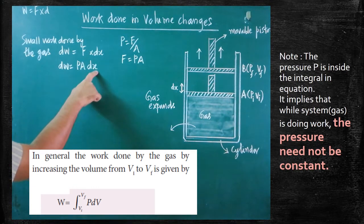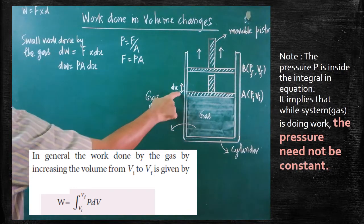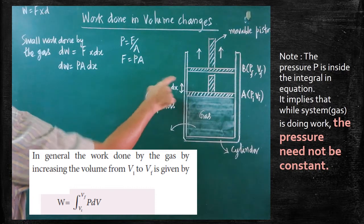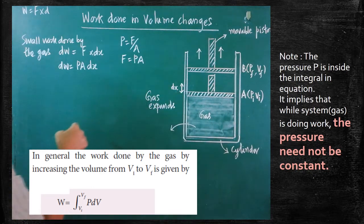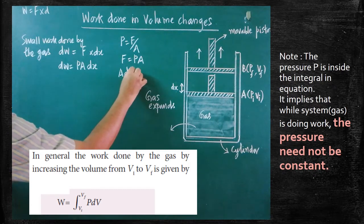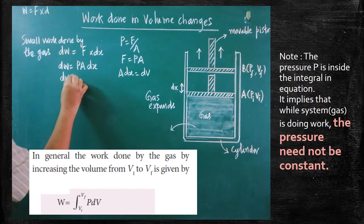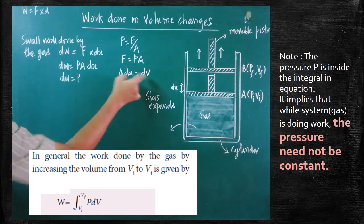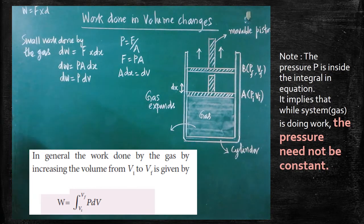Here, A into dx — A is the area of cross-section of the piston and dx is the small distance through which the piston moves. If the area of cross-section and the small distance are multiplied, you get the small change in volume. Therefore, A into dx gives you the small change in volume dV. Therefore, dW is equal to P into dV. This is the fundamental basic formula from which we get the expression for work done in volume changes.